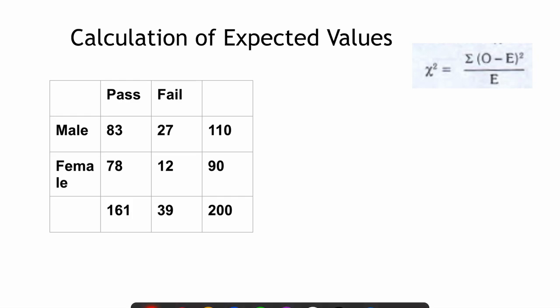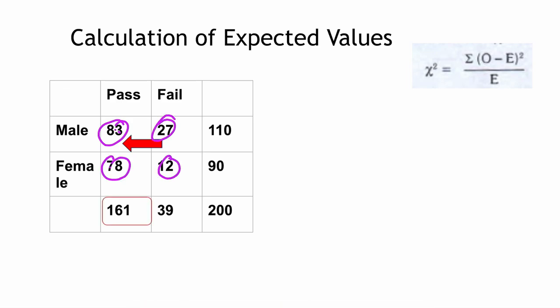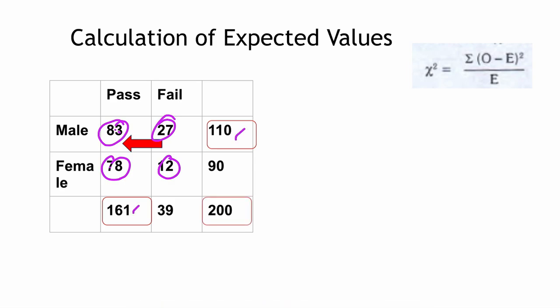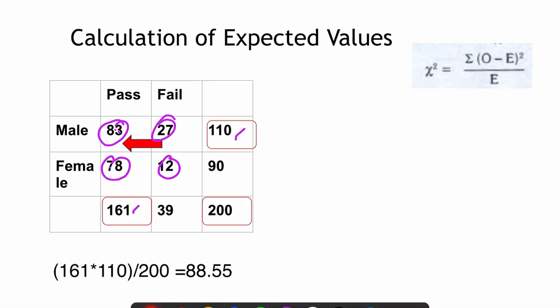This is the table we are given. We are studying the association between gender and exam results, so we calculate the expected cell values. What we observe in the original table is the observed value. The expected value is calculated by multiplying column total by row total divided by grand total. For the first cell, the expected value is 88.55.